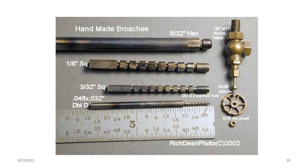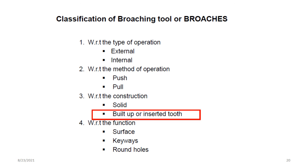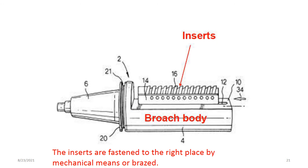With respect to construction, broaching tools can be solid type or built-up type. In the built-up or inserted tool type, inserts are fitted to the broach body and fixed in place by mechanical means. These are the inserts attached to the broach body.